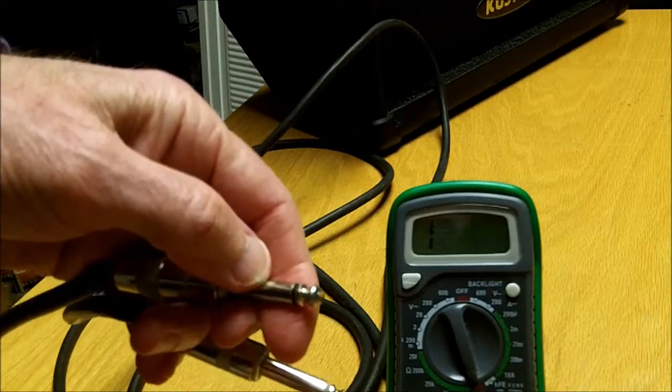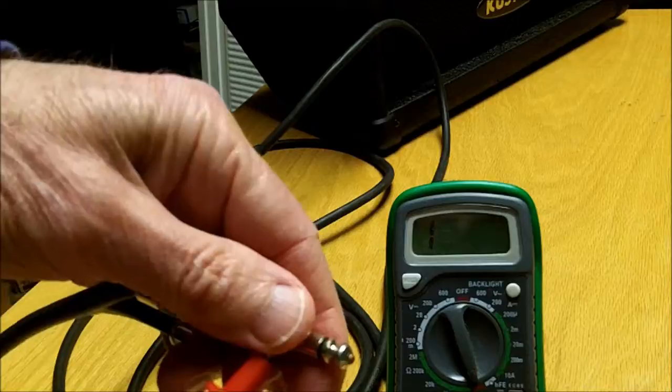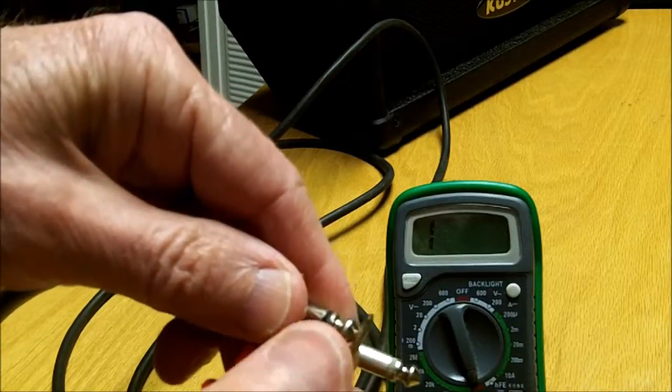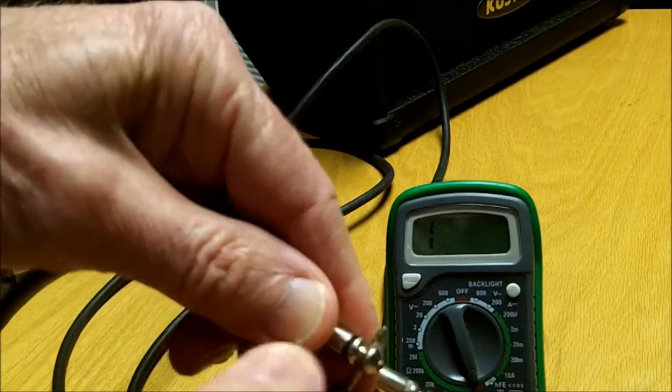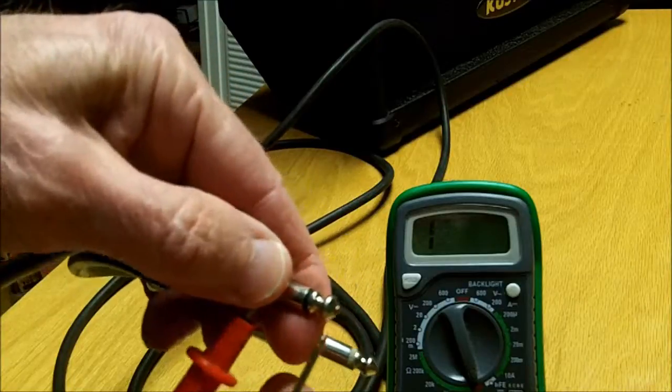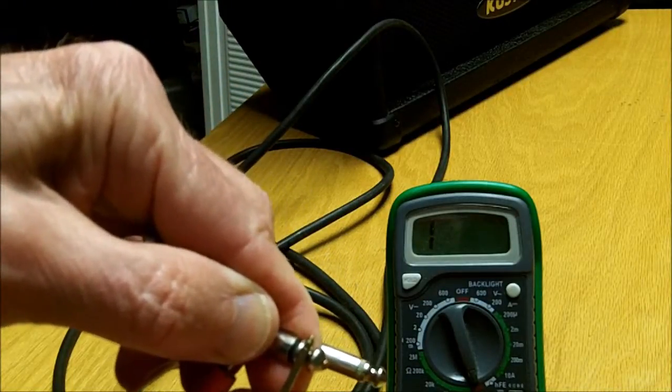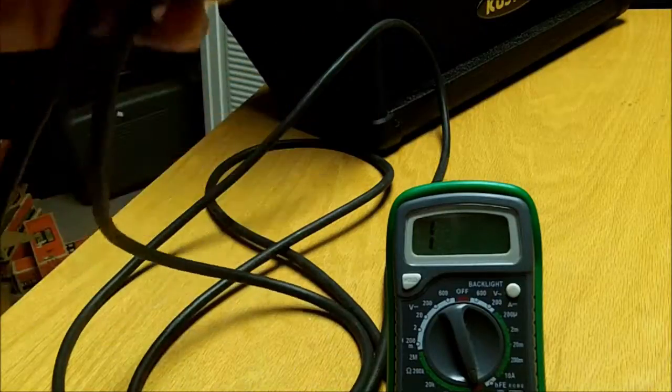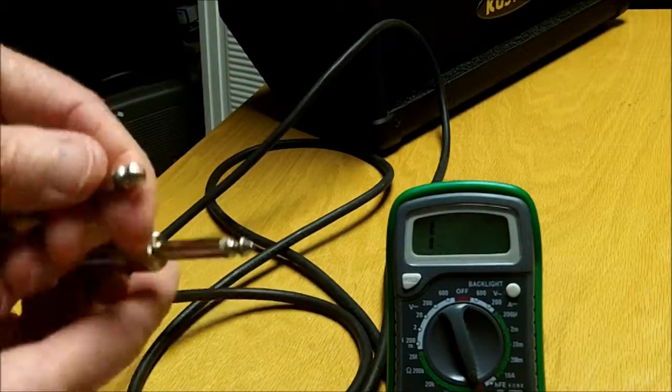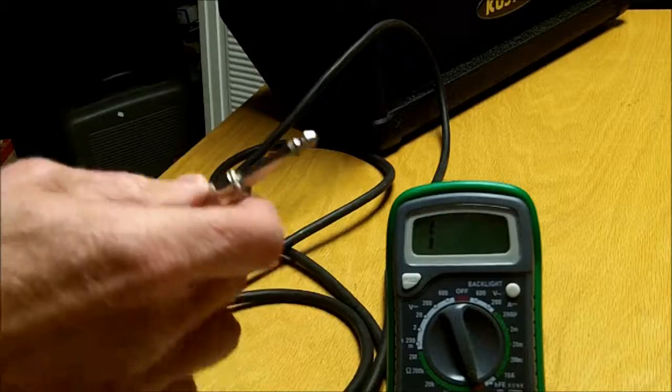Let's just check one other thing. Let's make sure it's not shorted out. We put the multimeter across the shield and the tip and we hear nothing. It's an open circuit, we can see from the meter there. So the cable appears to be good. Let's plug it back into the speaker.